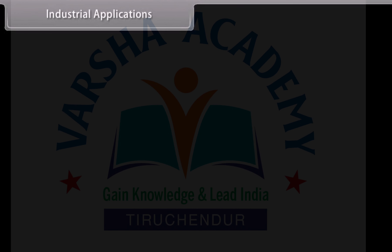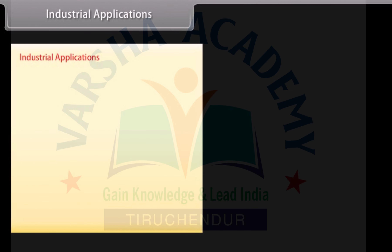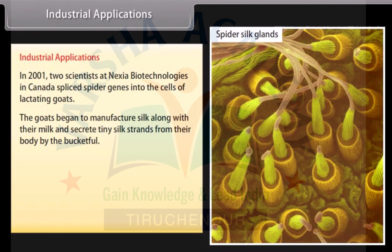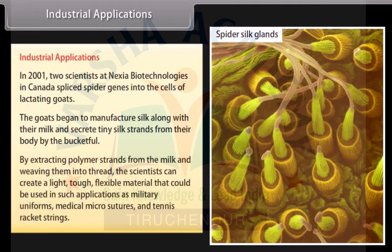Industrial applications: In 2001, two scientists at Nexia Biotechnologies in Canada spliced spider genes into the cells of lactating goats. The goats began to manufacture silk along with their milk and secrete tiny silk strands from their body by the bucketful. By extracting polymer strands from the milk and weaving them into thread, the scientists created a light, tough, flexible material that could be used in applications such as military uniforms, medical micro-sutures, and tennis racket strings.